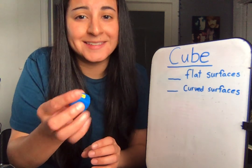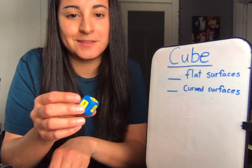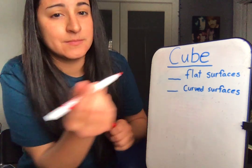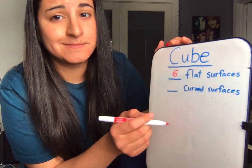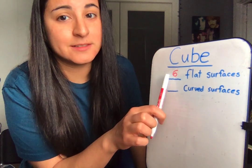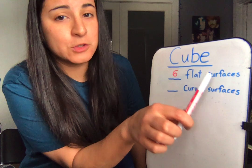A cube has six flat surfaces. Say it with me. A cube has six flat surfaces.